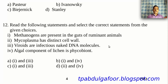Read the following statements and select the correct ones. 1. Methanogens are present in the guts of ruminant animals. 2. Mycoplasma has a distinct cell wall. 3. Viroids are infectious naked RNA molecules. 4. The algal component of lichen is phycobiont. Option A: 1 and 3. Option B: 1 and 4. Option C: 1 and 3. Option D: 2 and 4.